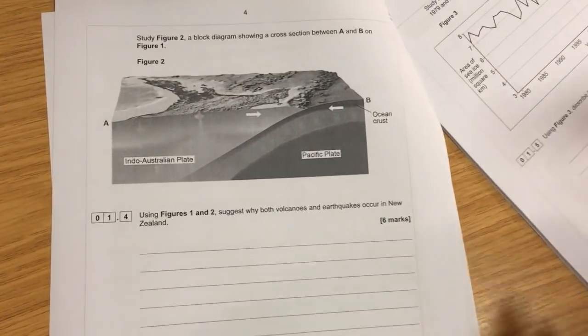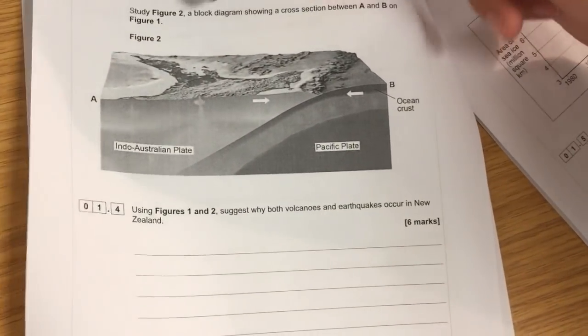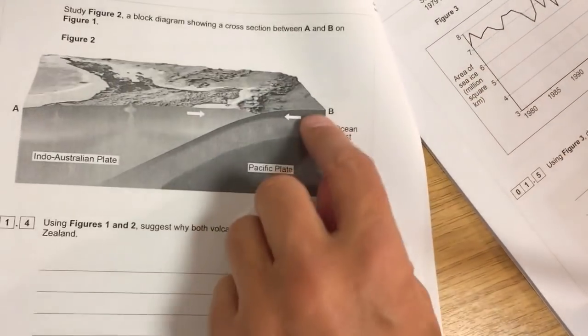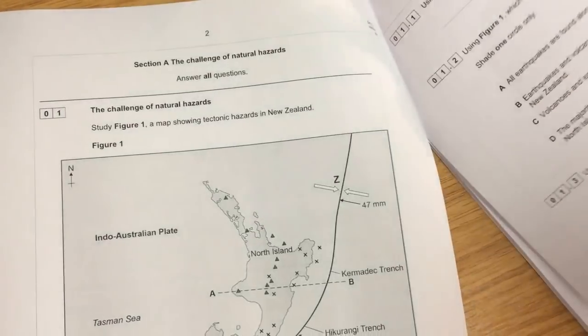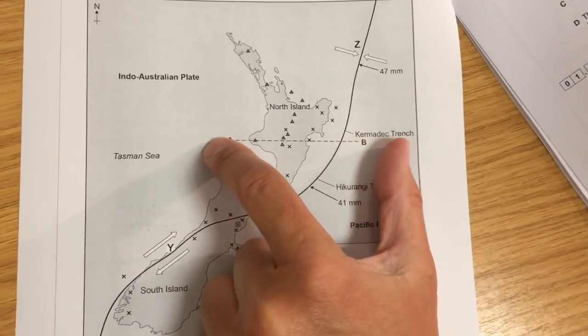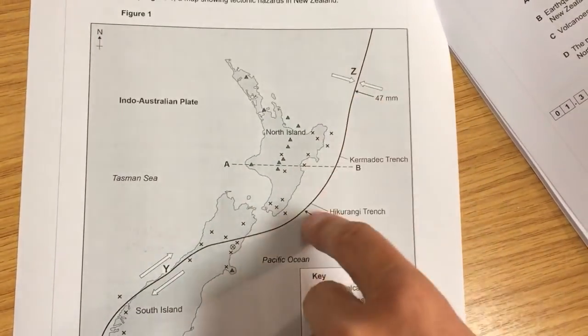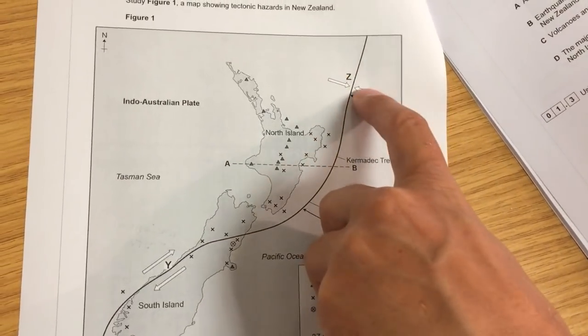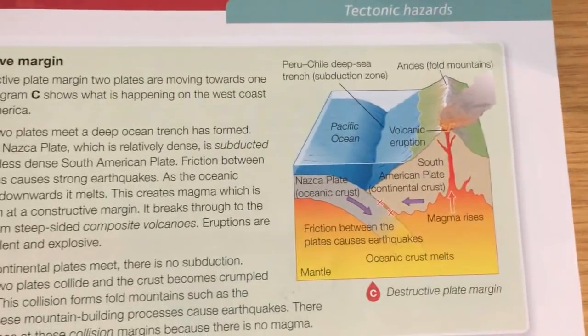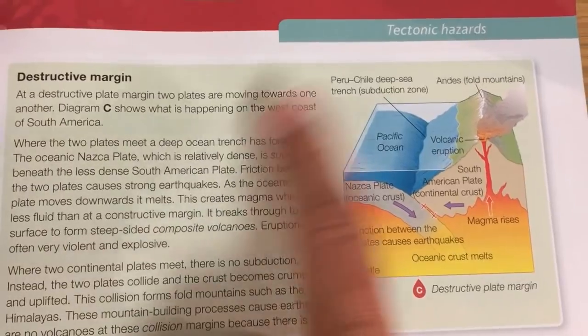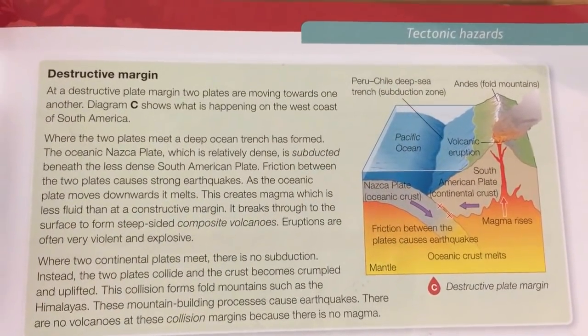This question asks you to look at Figures 1 and 2. Basically, it's showing you cross-section A to B — across that bit of land, going over this plate margin, which is destructive: one plate going into another. So I'll show that one — that's a destructive plate margin. It's the opposite way around because you've got land on this side and ocean on that side in our New Zealand example.